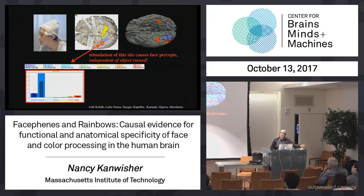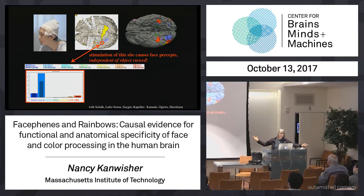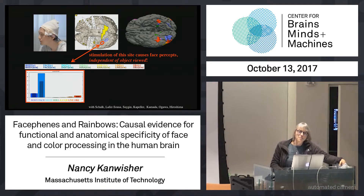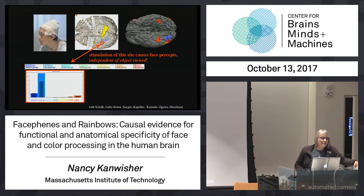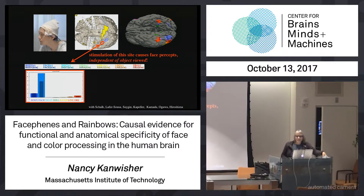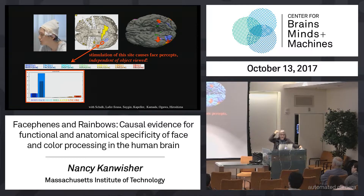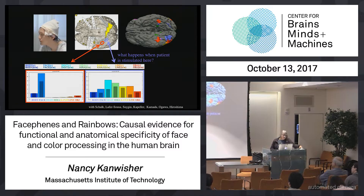He could have reported anything else — he was asked to report anything that changed — and he didn't report anything other than seeing a face. But we're social primates; we see faces in clouds, we see faces all the time when they're not there. Maybe any damn thing you do to the brain makes you see a face. So let's ask what happens in other electrodes — specifically, what happens when you stimulate right next door in the electrode that responds preferentially to color.